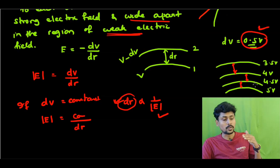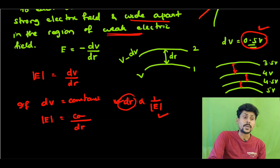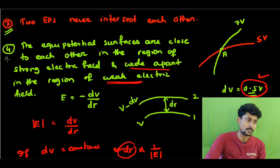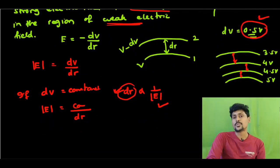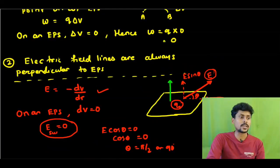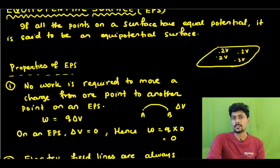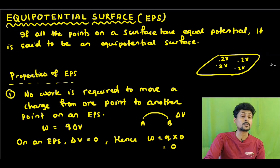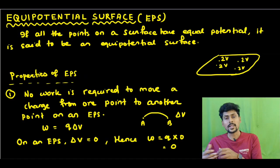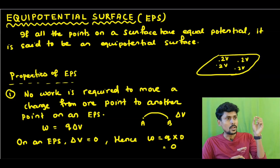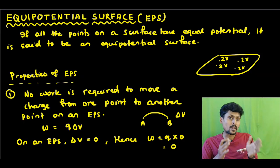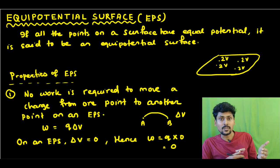So remember property number 4 — actually all four properties are very important, but property number 4 is the most important of these four. These are the four important properties of EPS. Next, we will discuss how to draw EPS for different charge systems: a positive point charge, a negative point charge, a dipole, a pair of like charges, and a uniform electric field.